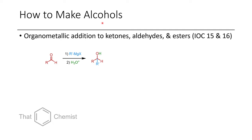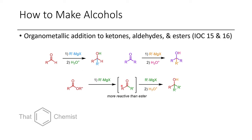Another way to make an alcohol is the addition of an organomagnesium or organolithium compound to a carbonyl. Most of the time we use organomagnesiums because they tend to be mostly nucleophilic, but we can also use organolithiums occasionally. If you add to an aldehyde, you'll get a secondary alcohol. If you add to a ketone, you'll get a tertiary alcohol. Because esters continue reacting, you get tertiary alcohols with symmetrical substitution.